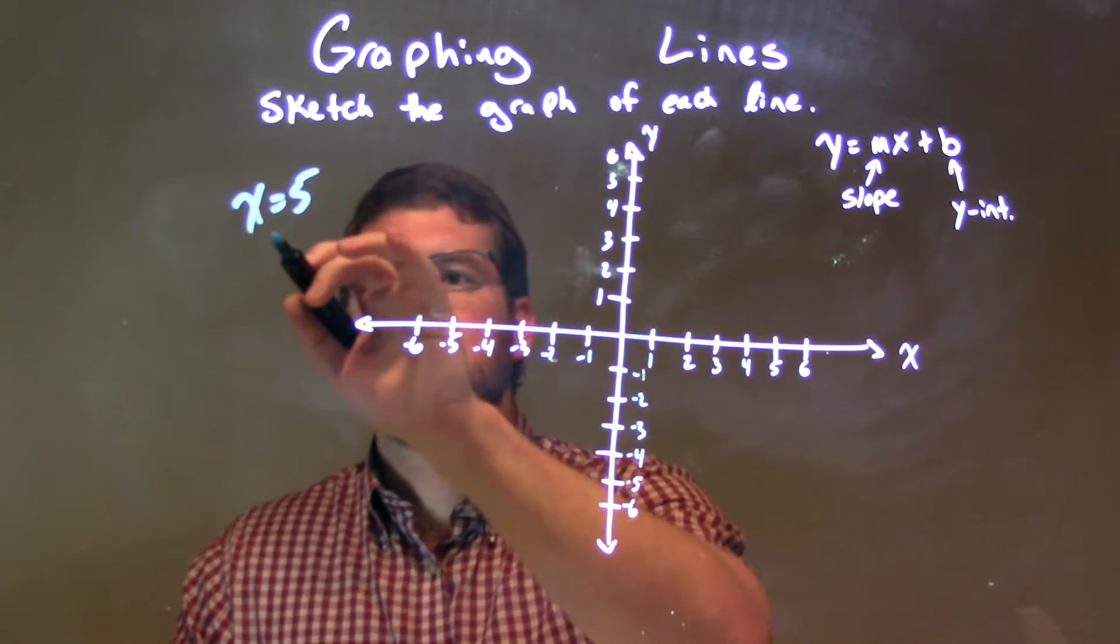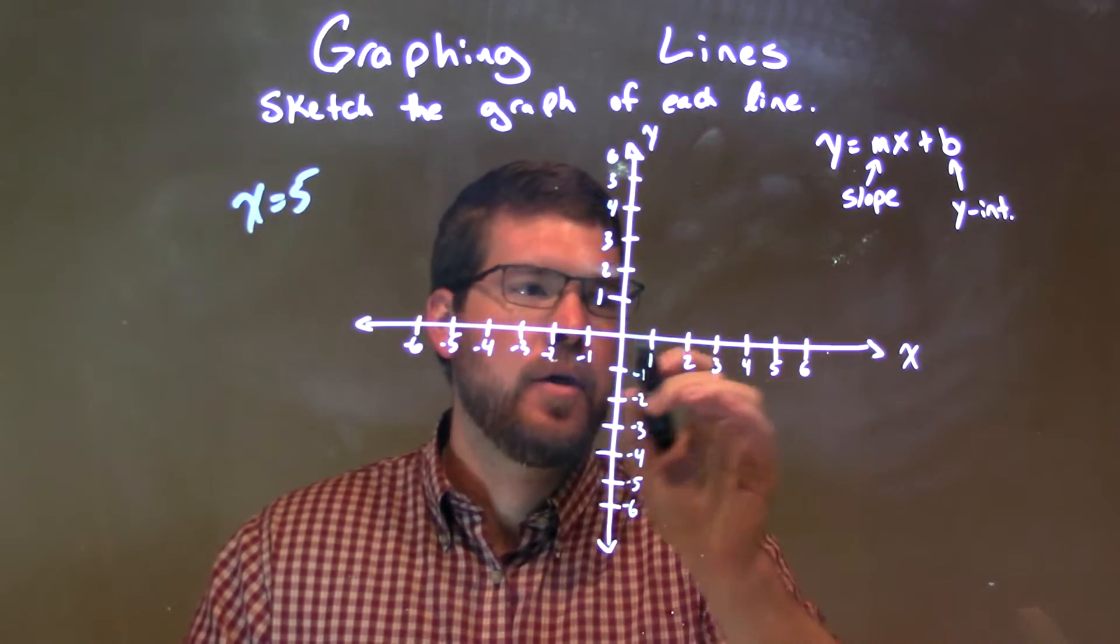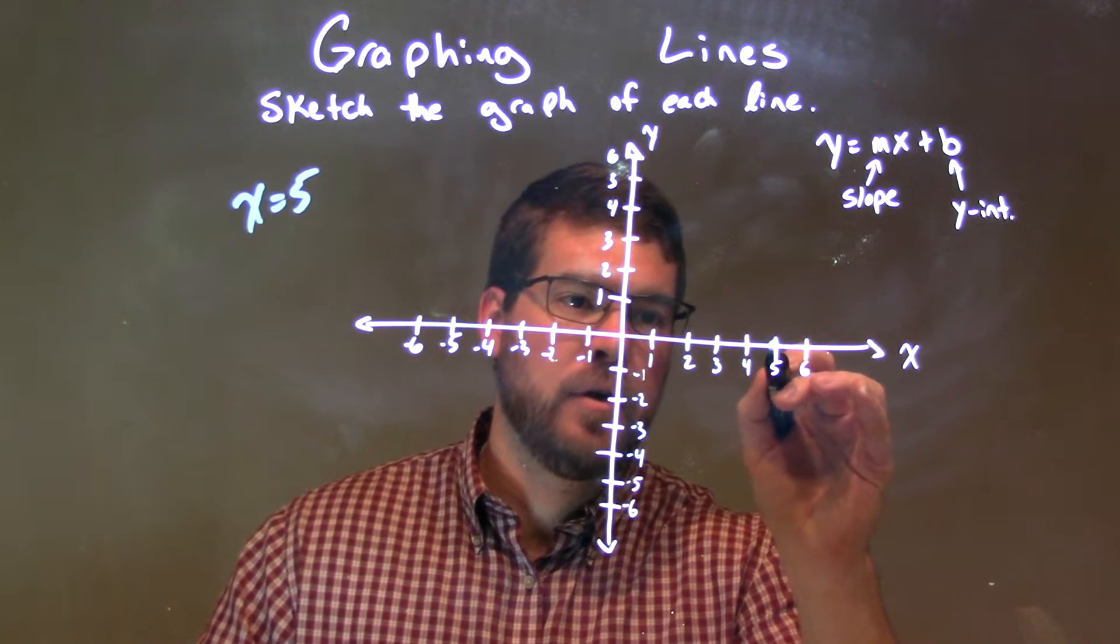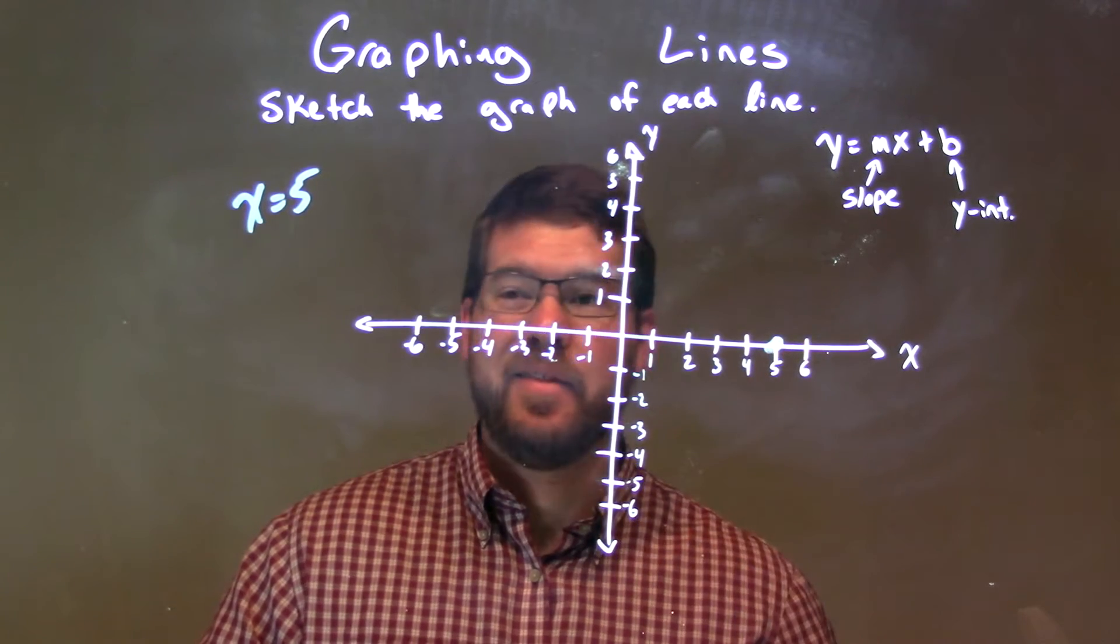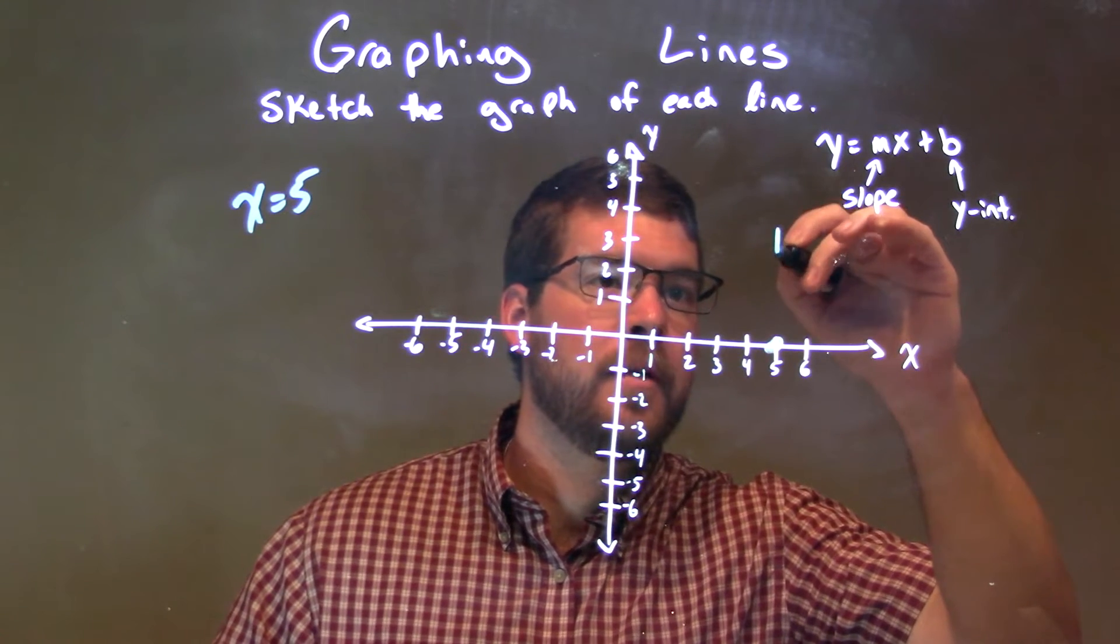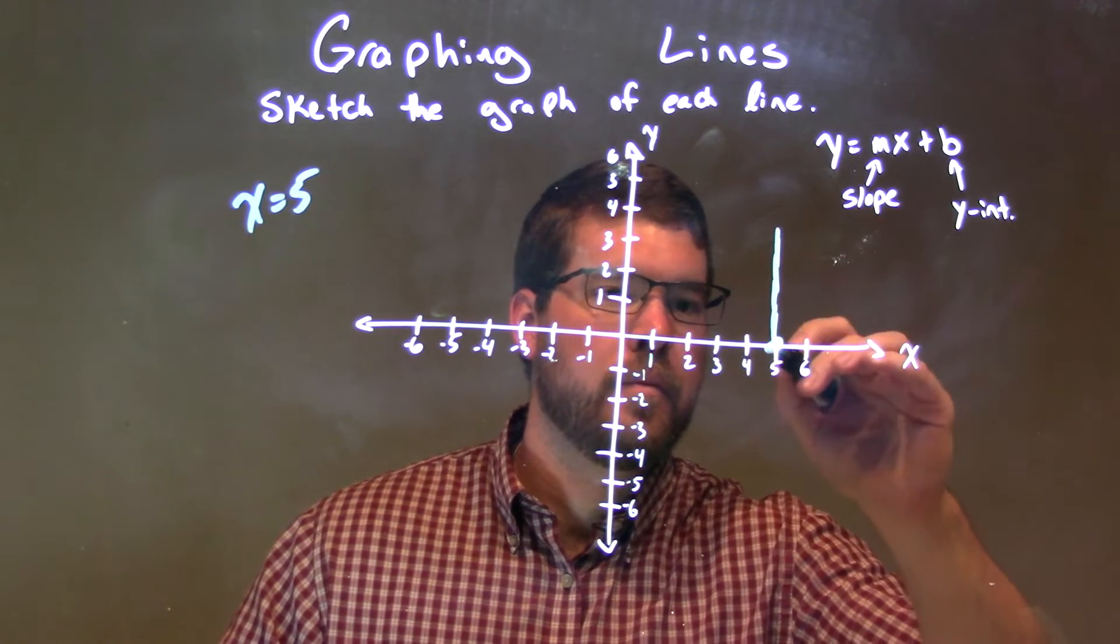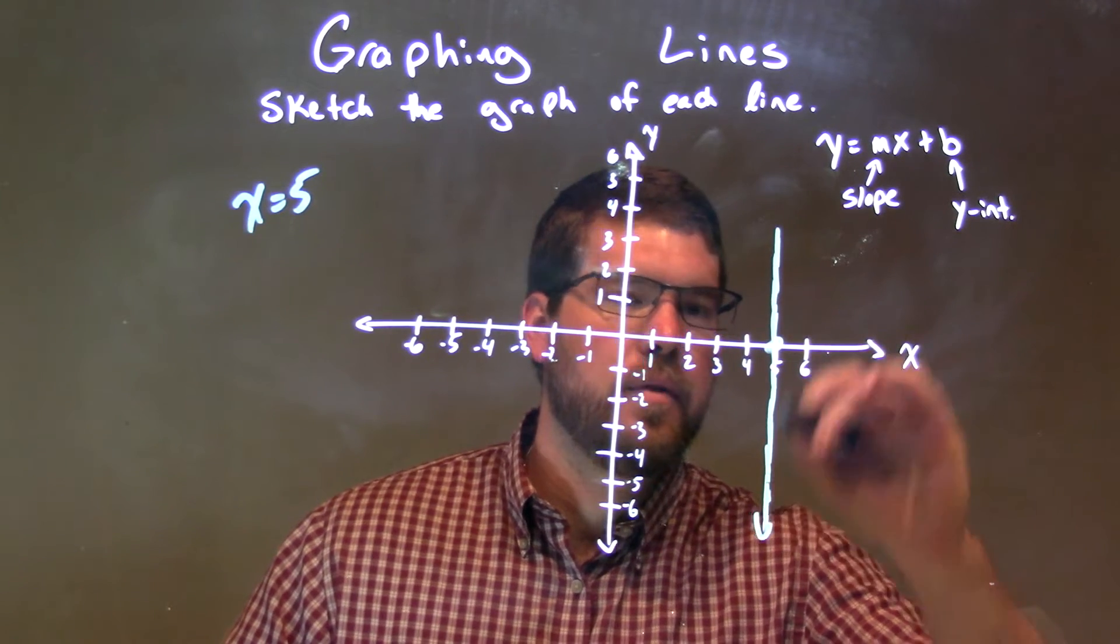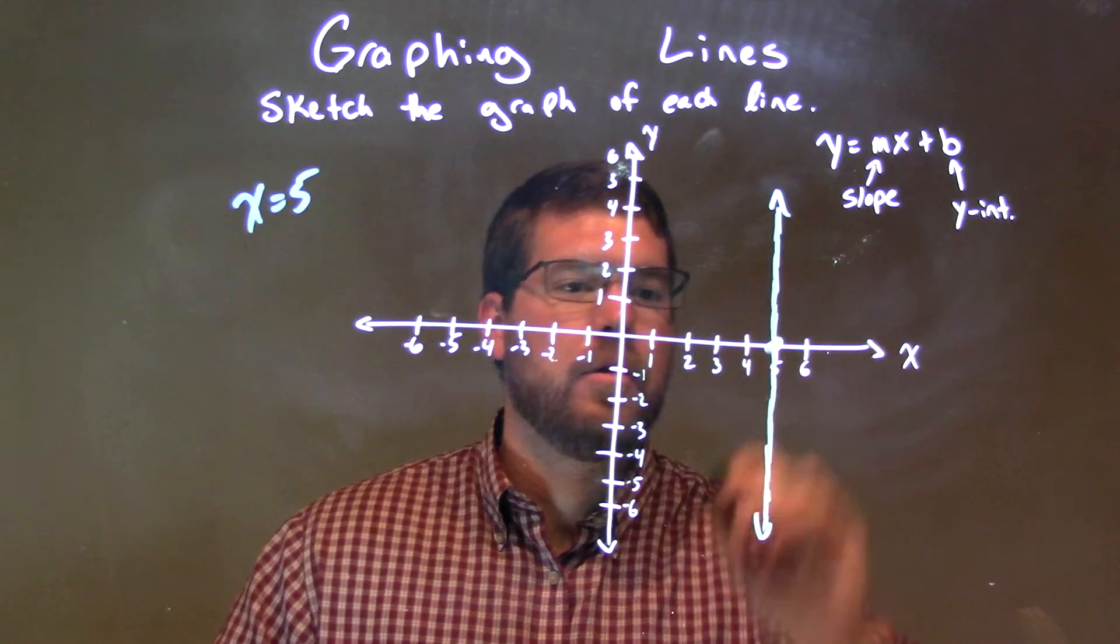So when x equals 5, the only thing we look at here is on the x-axis, where is it equal to 5? Right here at 5. We put a dot, and then we just have a vertical line from there. So we've got a vertical line, and then we have our line.